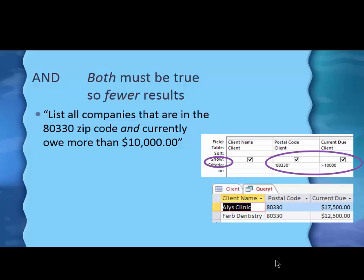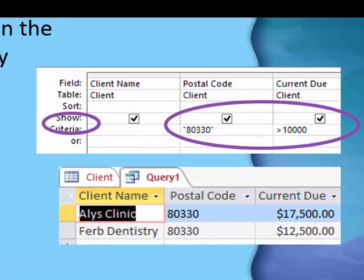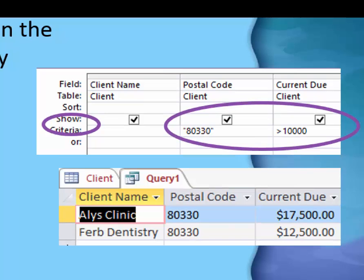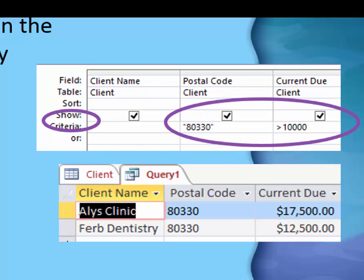Well, let's look. So with the AND, both must be true, therefore there will be fewer results. This concept is always difficult to understand for beginners, the AND and the OR, but AND requires two things to be true, so there are fewer results. And I said, list all companies in 80330 and currently owe more than $10,000. You can see the way my query was written on that criteria row. I chose a postal code of 80330, and in the current due column, I wrote greater than $10,000, and it showed me my two results.